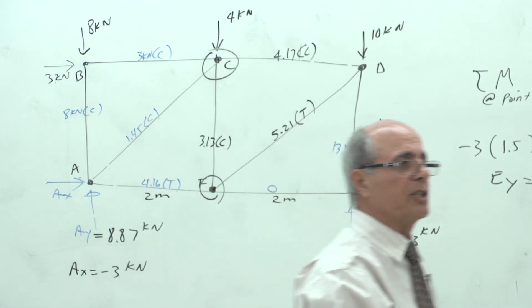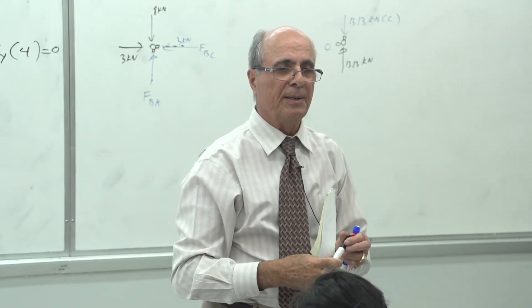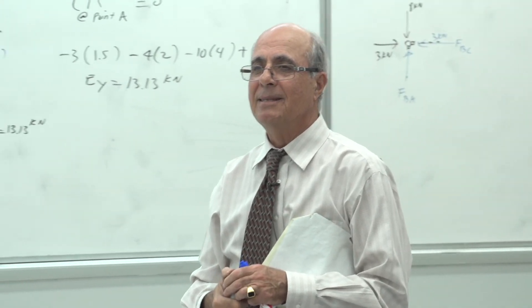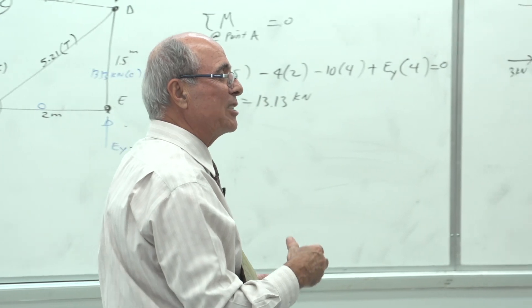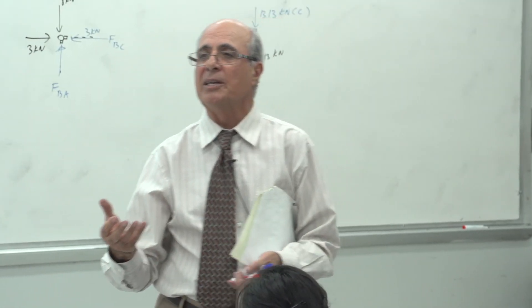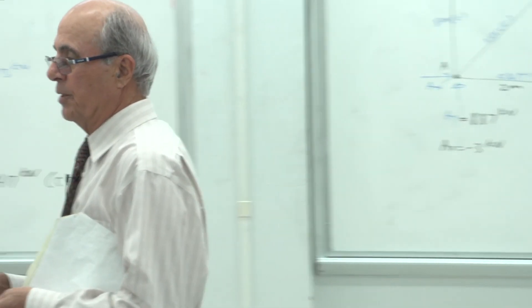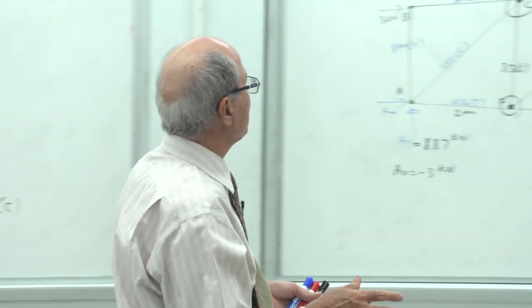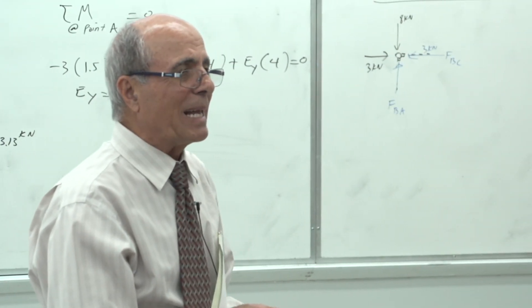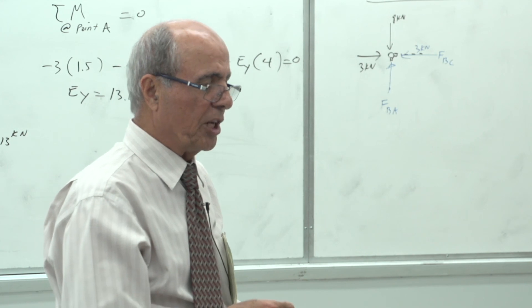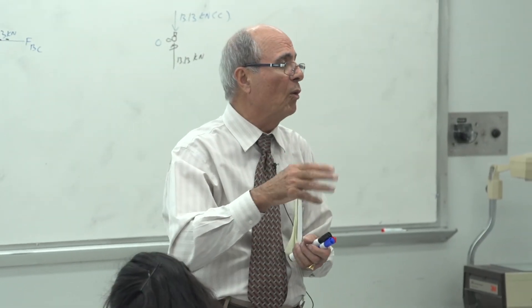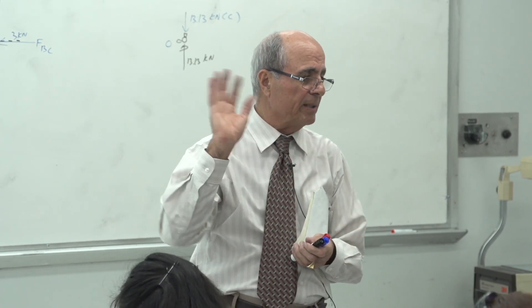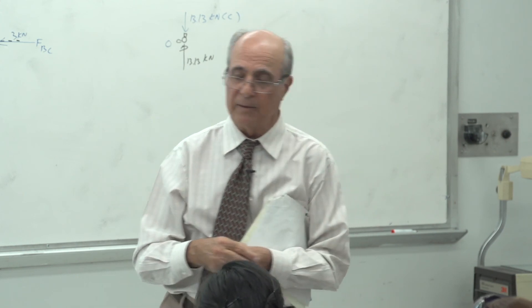The last remaining joint — joint C — should be used as a check. Do not solve for new unknowns there; instead, verify that all forces balance. If sigma Fx and sigma Fy are both approximately zero, your work is correct. Small discrepancies due to rounding (within 0.01 to 0.02) are acceptable. If the sums are far from zero, you made a mistake somewhere and must recheck. Write this down: use the last joint for accuracy verification.